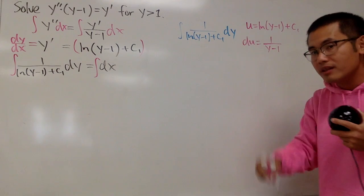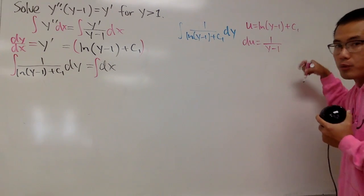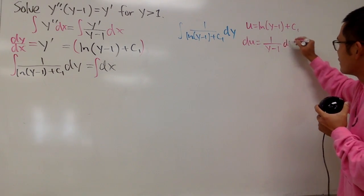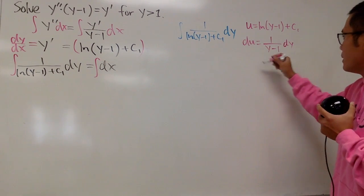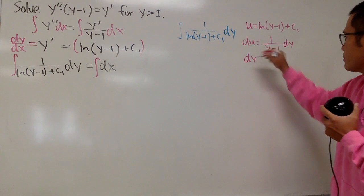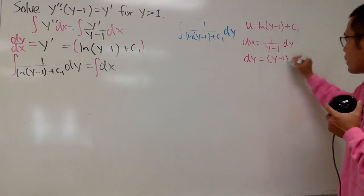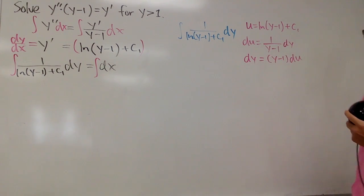because the derivative of y-1, with respect to y, is just 1. So, this is not like y' or so. It's just this, but we do have the dy right here. And of course, we can solve for the dy, so we get dy, multiply this on both sides, we get parentheses y-1 times du.